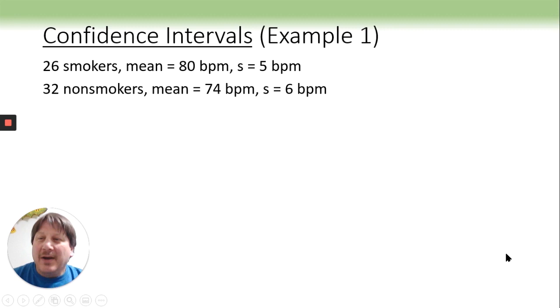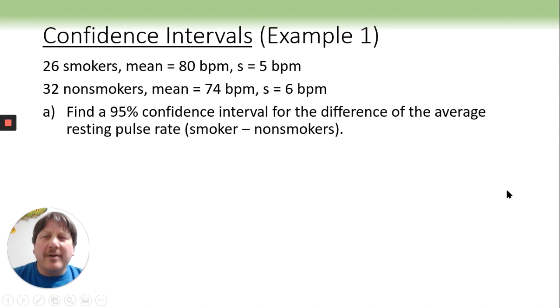So when I do these problems, I like to write down the key values that I know I'm going to need. So like the sample size, the mean, and the standard error, the sample standard deviation. And then the sample size, the mean, and the sample standard deviation. It's arbitrary as to which one you call first. I would probably do the smokers first because our calculator does the first one minus the second one. That gives you a positive value. On your assignment, they tell you which one to do first.